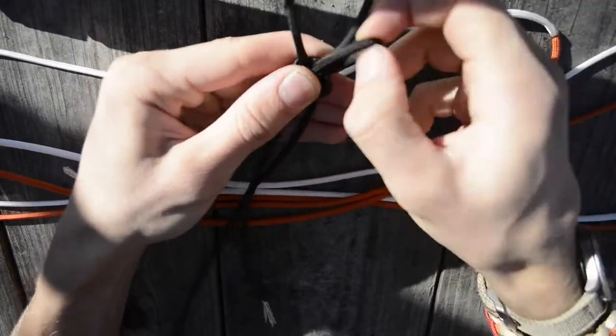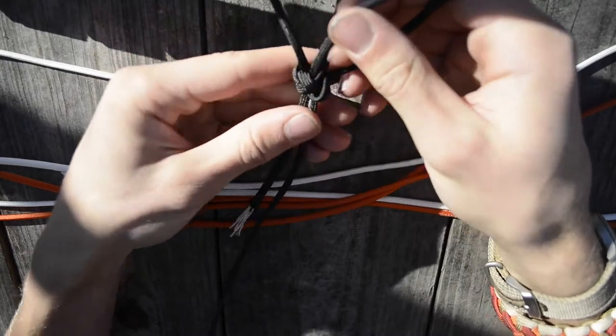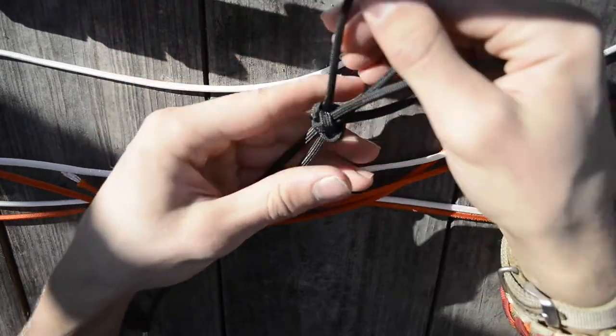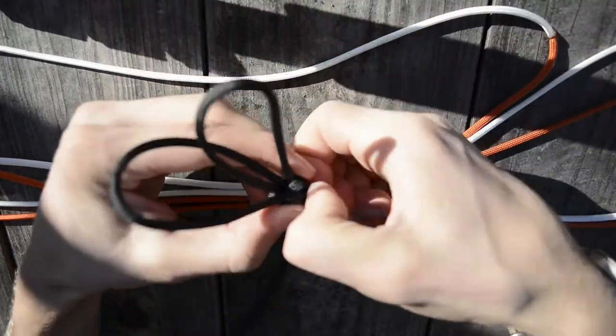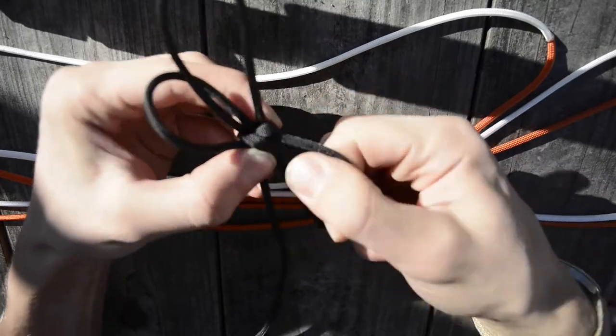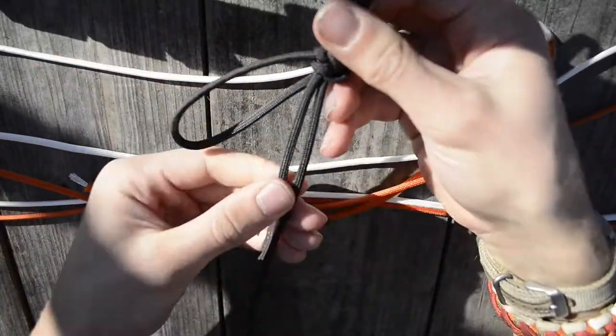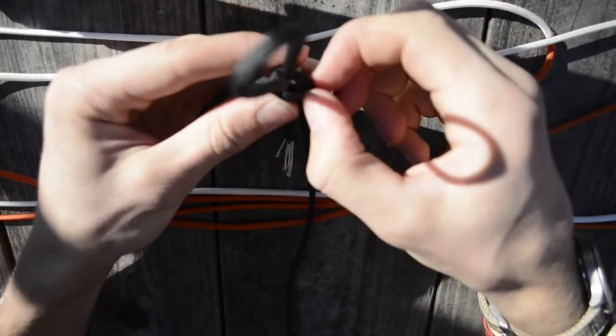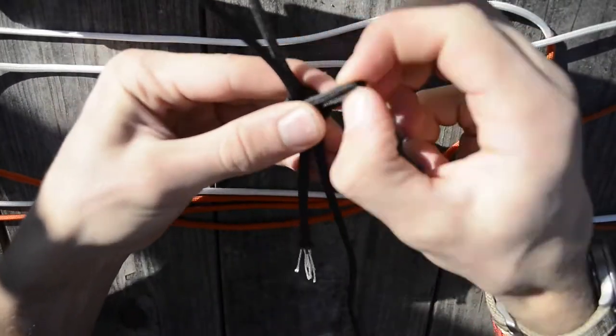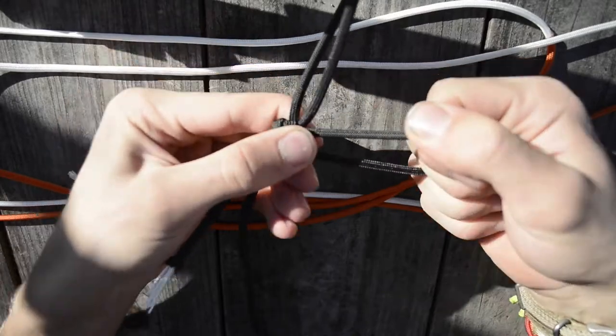And of course, we want to kind of shift this knot, if you will. Because we don't want a bracelet that's like two inches long. We actually want a bracelet that is normal sized. So you kind of want to work some of this excess of these two end strands and just kind of work it throughout this entire knot.